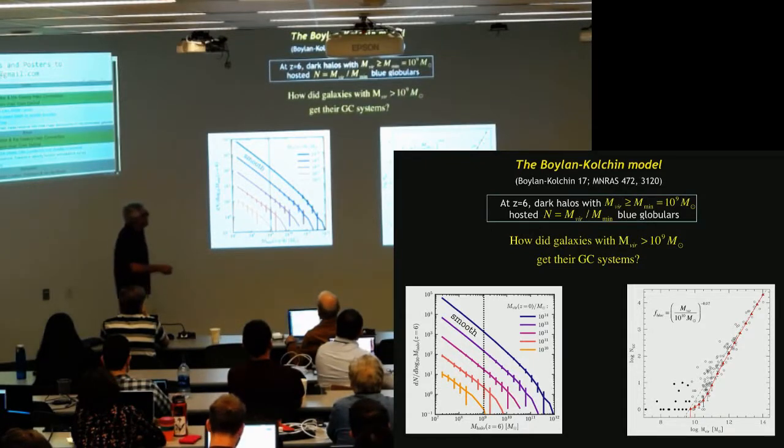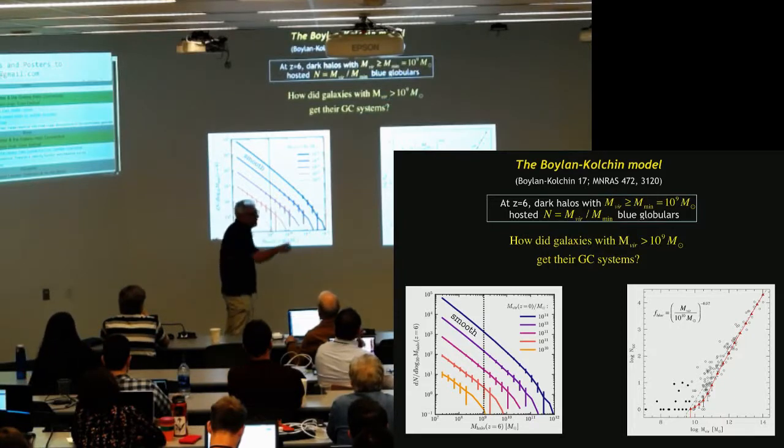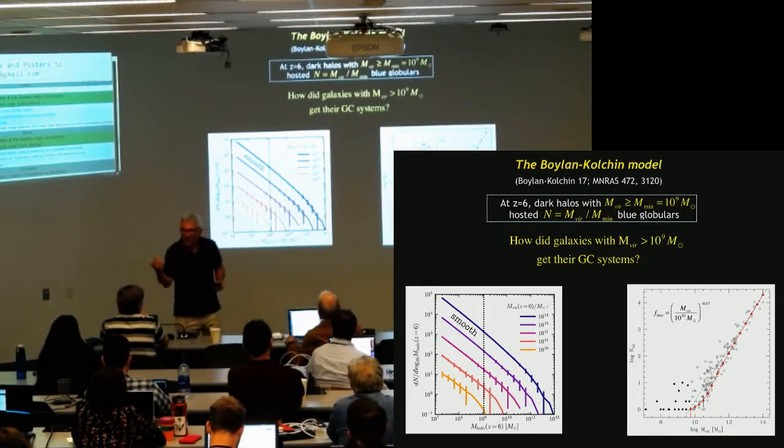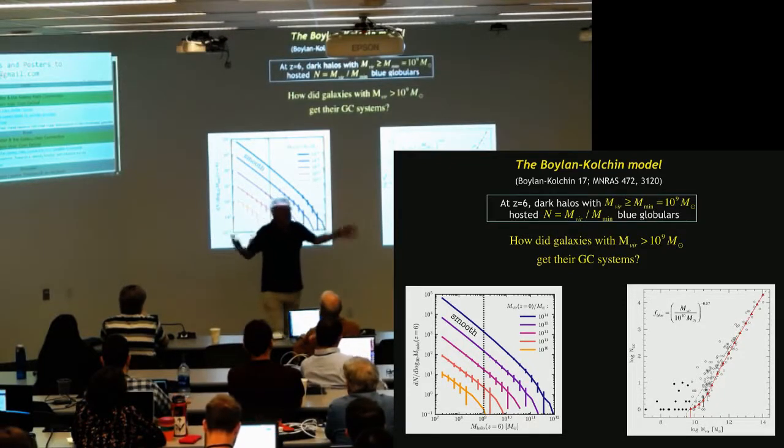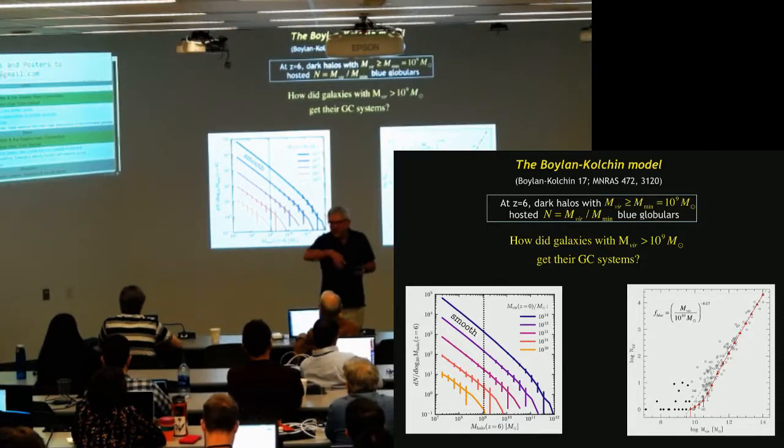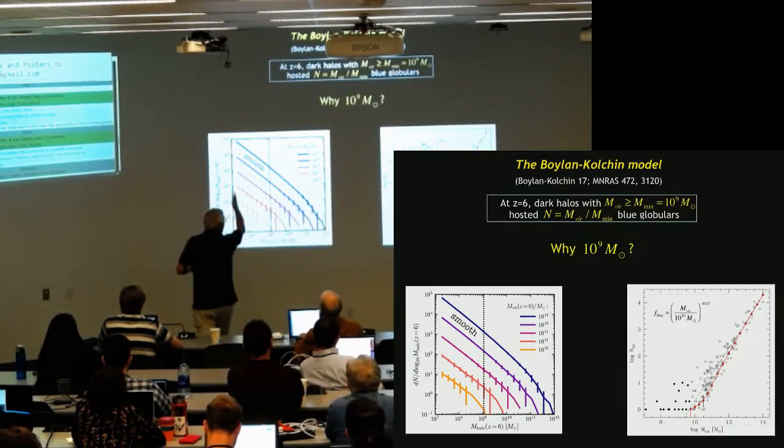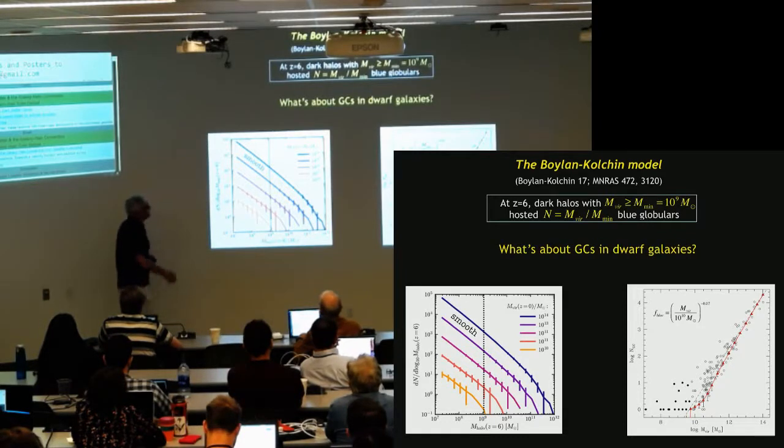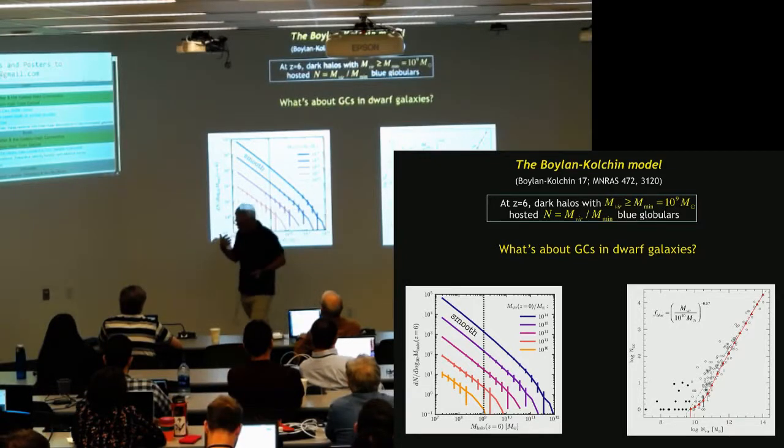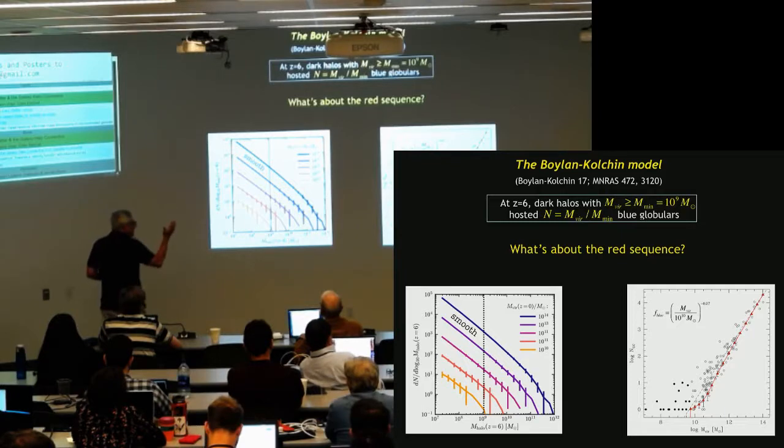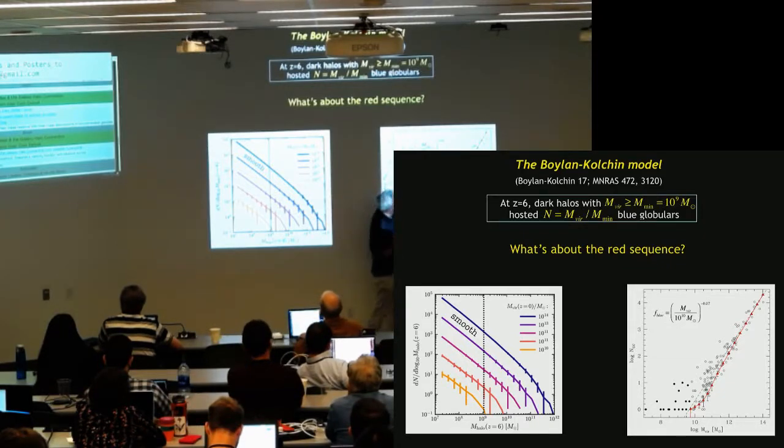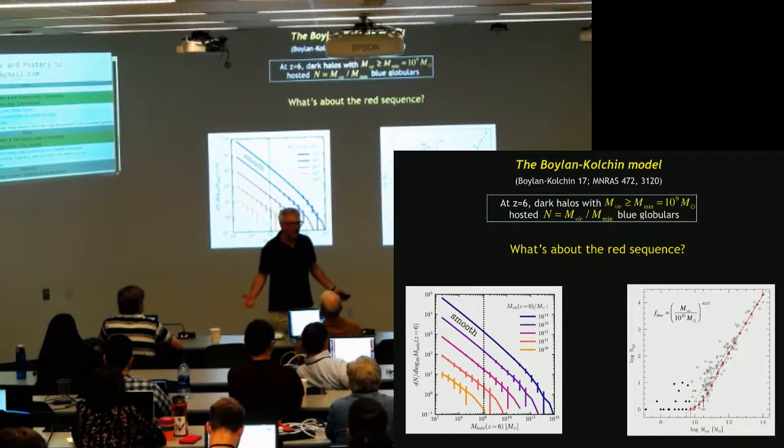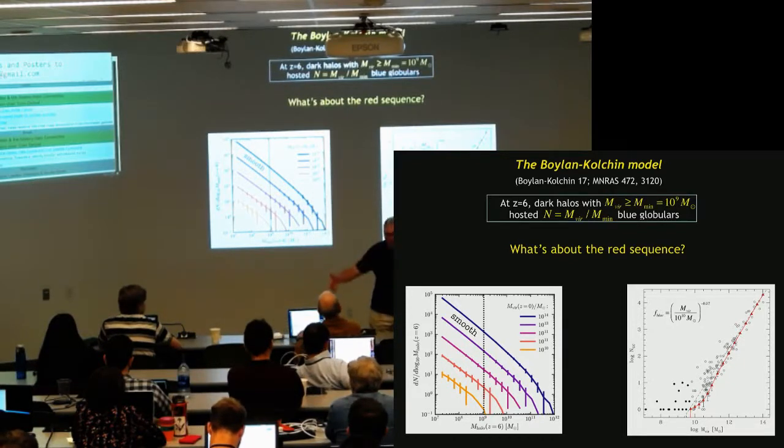And there are other problems. First of all, how did the globulars above 10 to the 9 solar mass get their globulars? Somebody put the solution in. These 10 to the 11 solar mass halos have already 100 globulars. So how did they form in these redshift six halos in the first place? You just played a little bit with the numbers. Why should it be 10 to the 9? And what determines this? And what about the globular clusters in the dwarf galaxies, which he cannot explain? So I think this model has some caveats. And it doesn't explain the red sequence at all. This thing here is the sum of the blue and the red sequence. If you take the blue sequence, and if you take into account that the blue fraction depends on virial mass, it doesn't work anymore. But how does the red sequence know how many blue clusters already formed so that it actually gets it right?